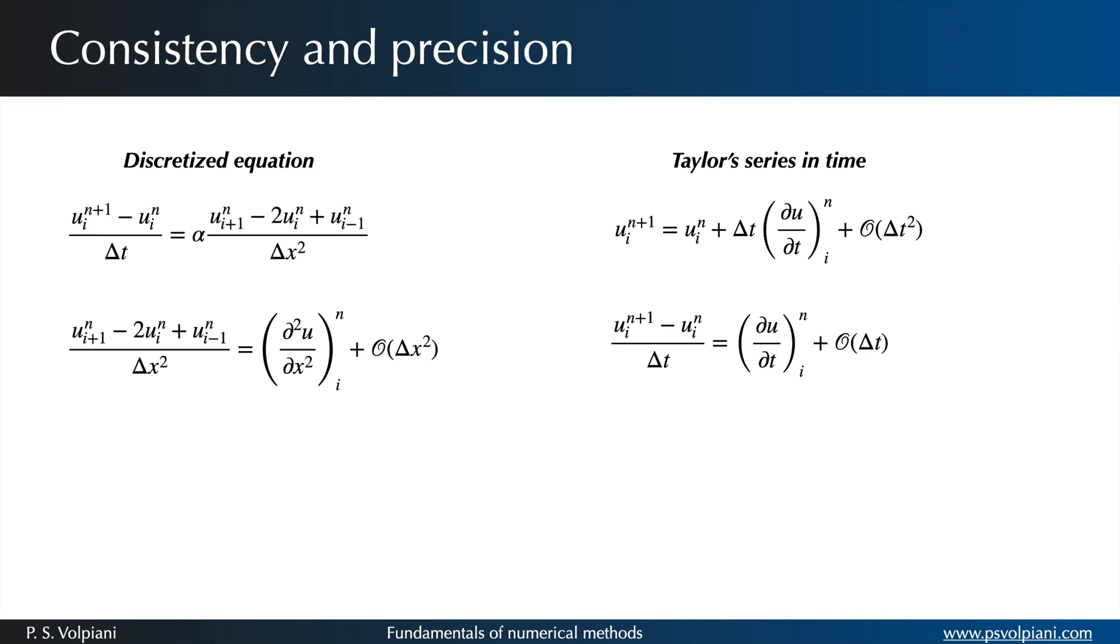Using Taylor's expansion in time, it is easy to see that the truncation error tends to zero when delta t and delta x tend to zero, evolving in order 1 in time and 2 in space. The numerical scheme is therefore consistent.